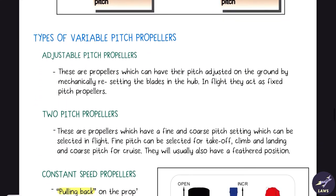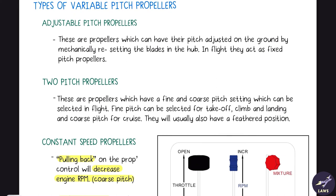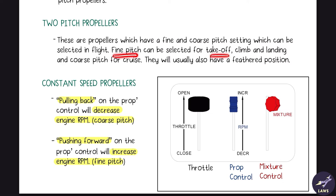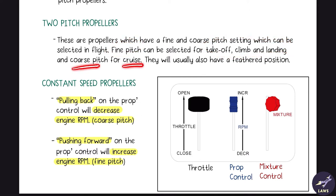Types of variable pitch propellers: first, adjustable pitch propellers — their pitch is adjusted on the ground by mechanically resetting the blades in the hub; in flight they act as fixed pitch propellers. Then two-pitch propellers — these have a fine and a coarse pitch setting. Fine pitch is used for takeoff, climb, and landing (high power operations); coarse pitch is used for cruising to save fuel. They also have a feathered position, which is basically full coarse pitch.